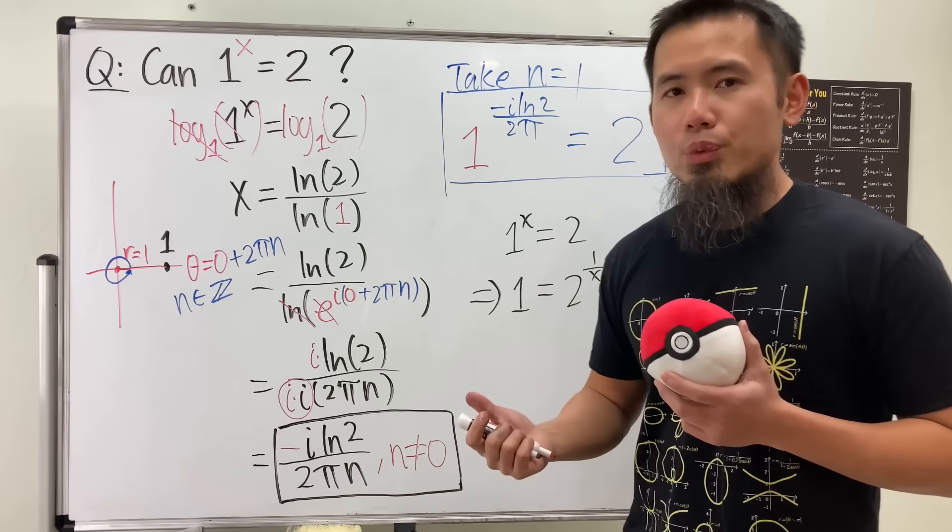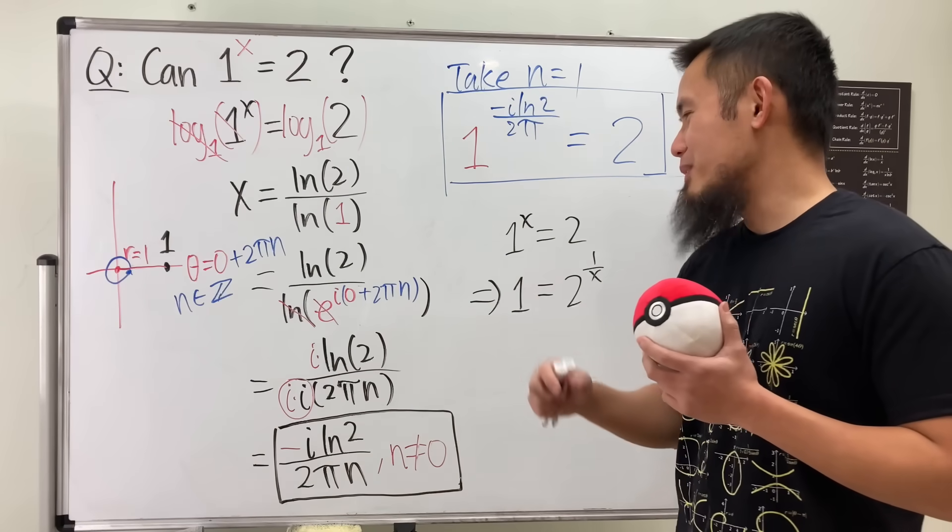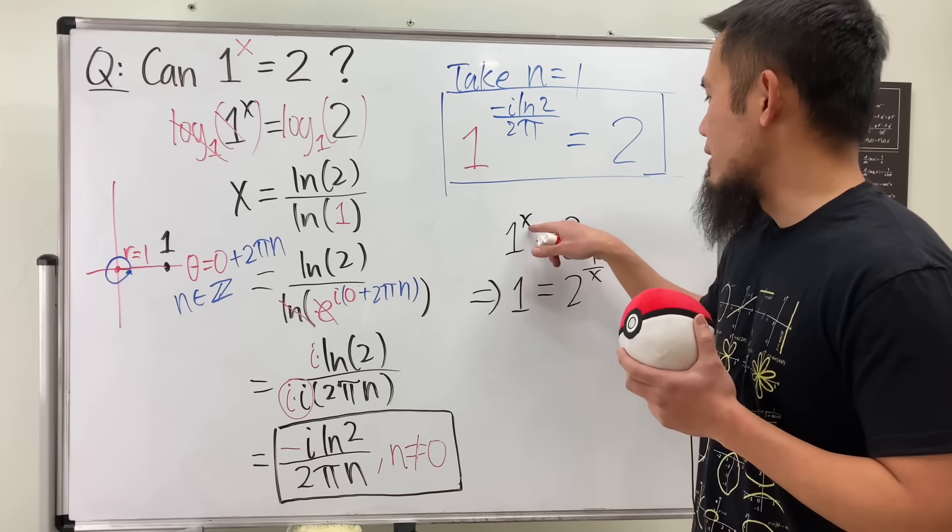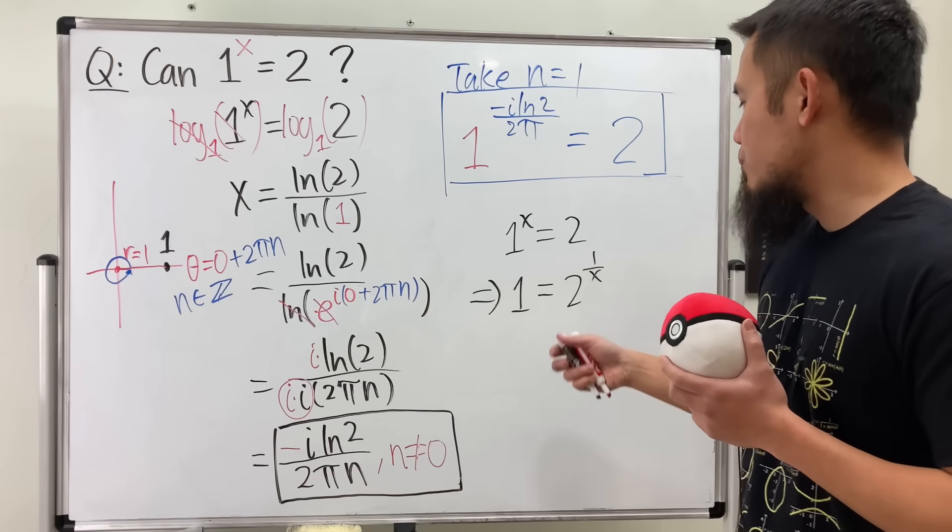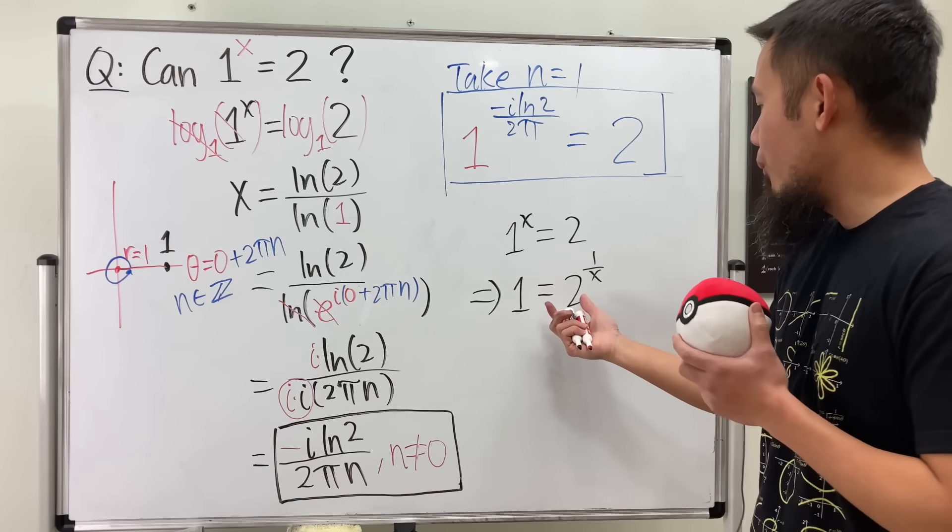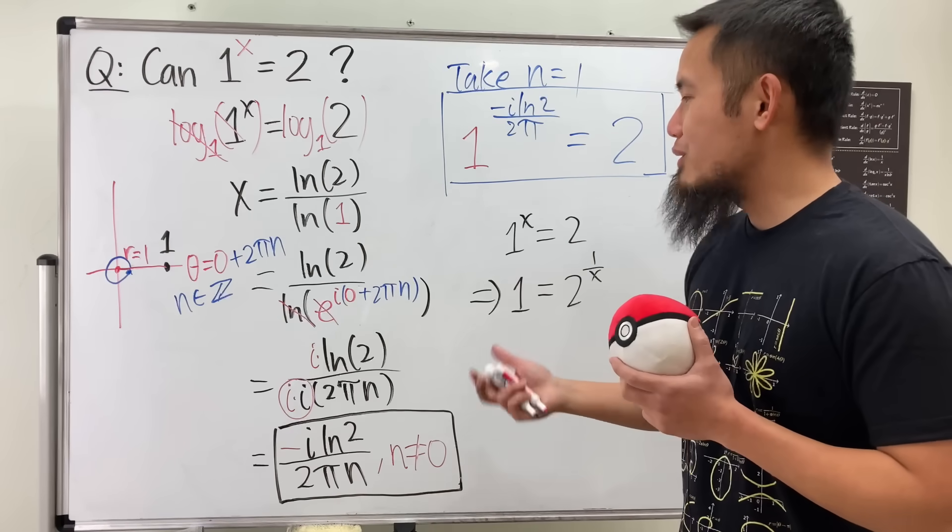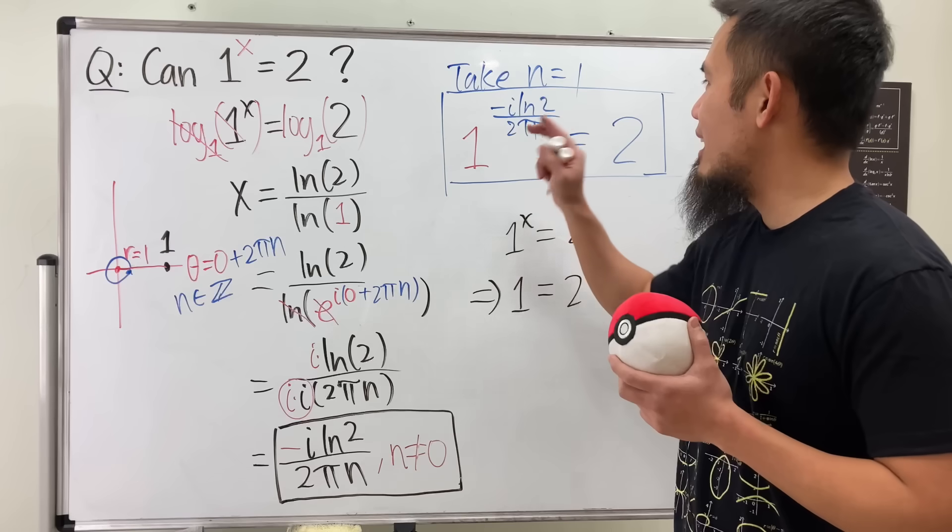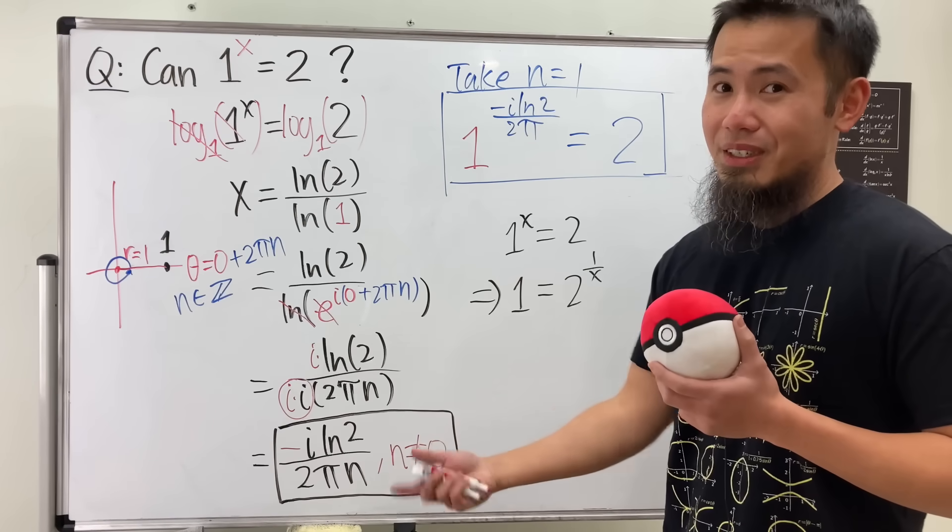Pretty interesting. I think it's just because how they compute 1 to some power is just always 1 because x is like a real number. So that's pretty much why I think. Once you enter this, you will see that it will actually give you an answer like that, right? Of course, n cannot be equal to 0, because it's that answer. Really cool, right?